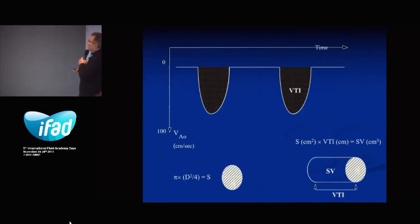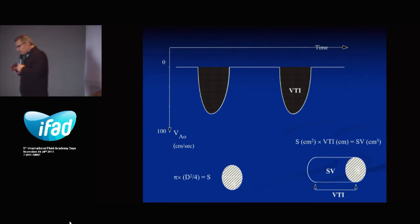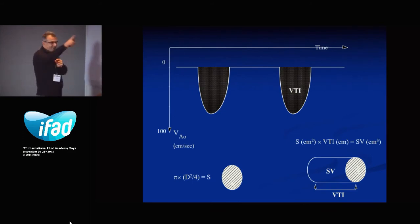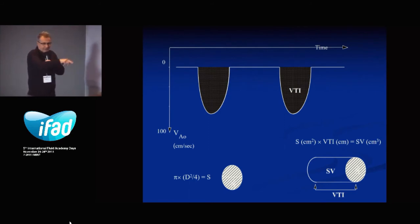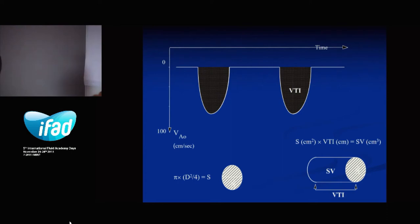The second point: by using Doppler, it is possible to estimate the stroke volume. Imagine the aorta here with the aortic annulus and the left ventricle. During systole, with the valve open, blood flows from the valve into the aorta until valve closure. The blood inside the aorta from the aortic annulus represents the stroke volume. To calculate this volume — as with any cylinder — you need the area and the length.